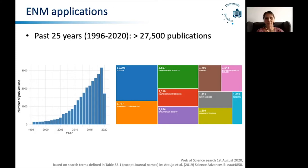Here I've put together a little literature research that I did on 1st August 2020, summarizing how many publications there have been on ecological niche models during the past 25 years, from 1996 onwards to today. I could roughly identify 27,500 publications, and the number of publications is constantly rising.